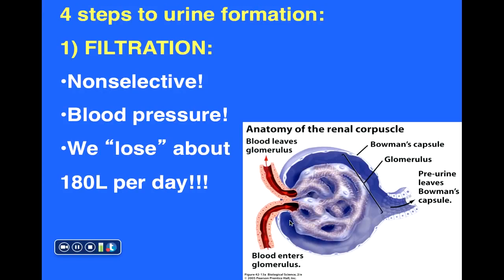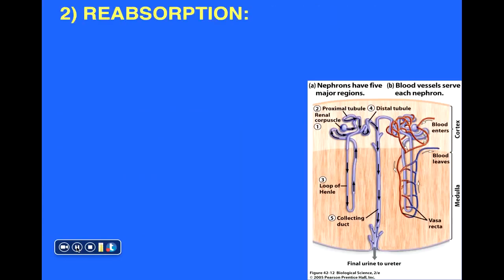Obviously most of that 180 liters is recaptured and retained within our bodies — that's essentially the volume of blood filtered out of the glomerular capillaries on a daily basis. Since we can't lose that much fluid daily, we must be able to recapture much of that fluid and many components we want to retain.